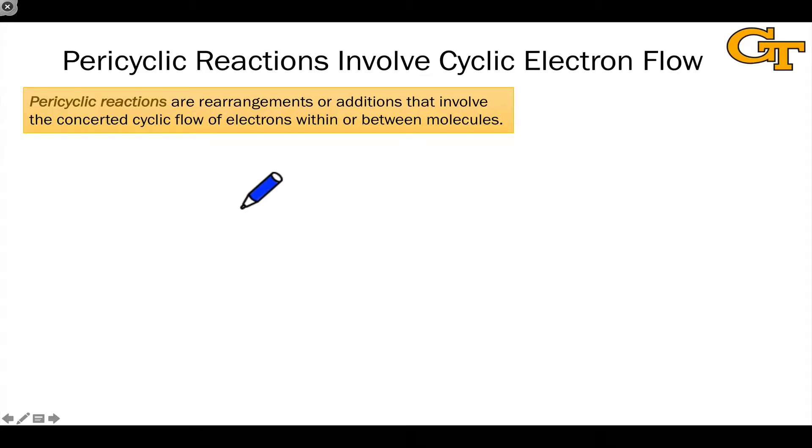One of the most important things to understand about pericyclic reactions from the outset is that they are concerted. They occur in a single elementary step. This means that pericyclic reactions involve a single orbital interaction as well. And because no intermediates are formed, there's essentially no time for bond rotations and things like this.